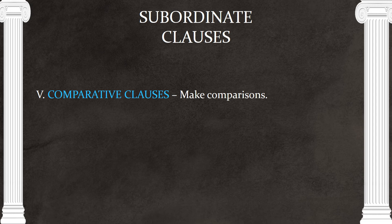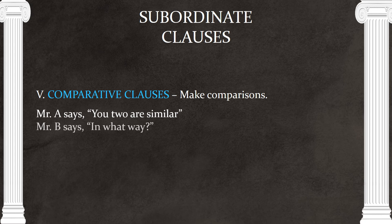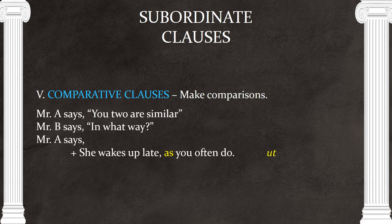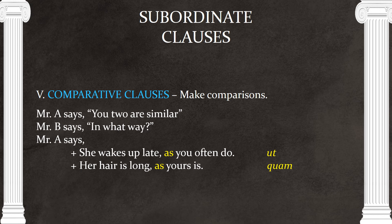Finally, comparative clauses help us make comparisons. For example: 'She wakes up late as you often do' — there's 'ut' again — or 'her hair is long as yours is' — and there's 'quam.' We look for these highlighted words to tell us when the next subordinate clause is starting.